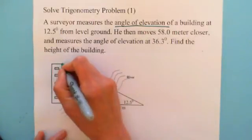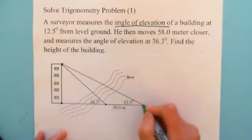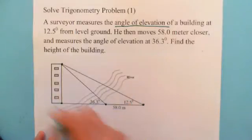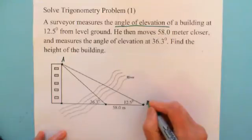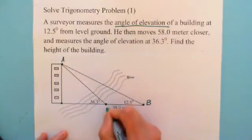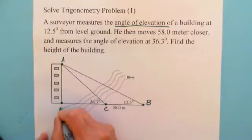So first let's make labels. The top of the building is A, the first place he measured is B, the second place is C, the bottom of the building is D.